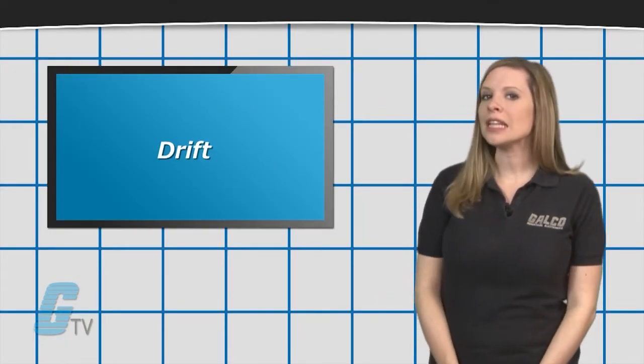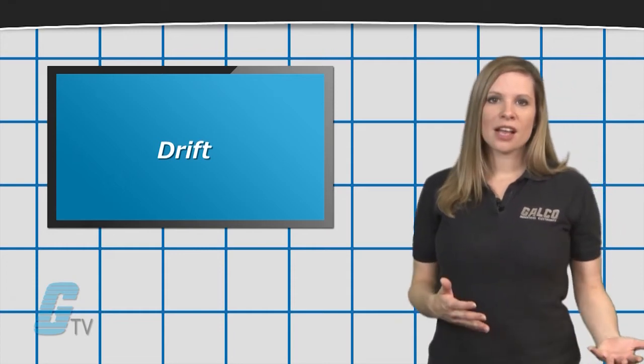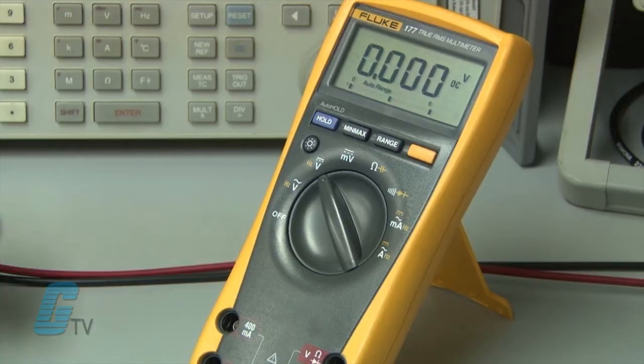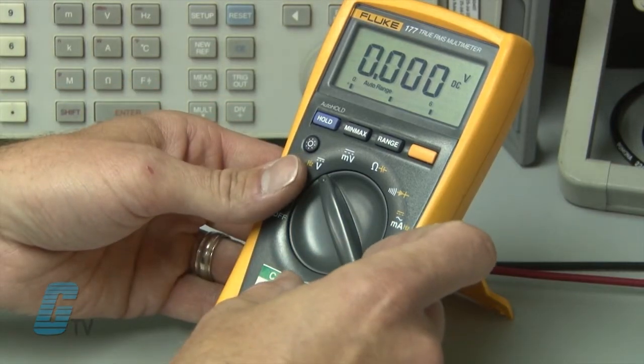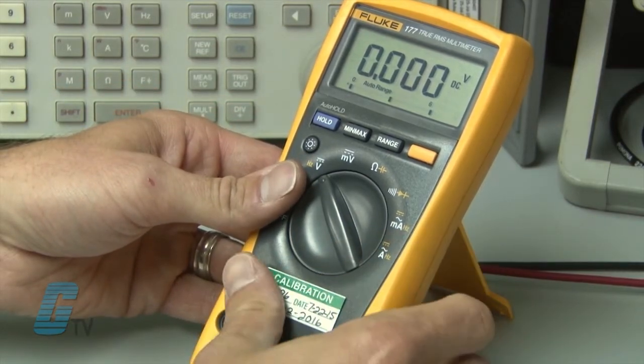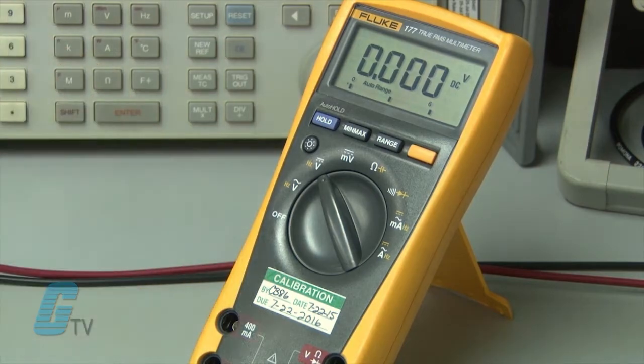Although drift cannot be completely avoided, it can be discovered and rectified by calibration. Periodic calibration is important to ensure that your equipment is making accurate and repeatable readings.